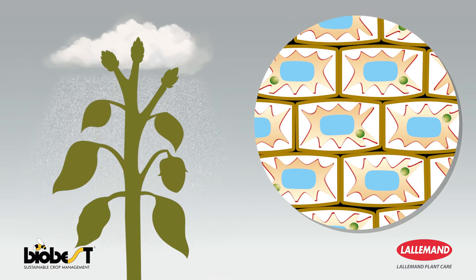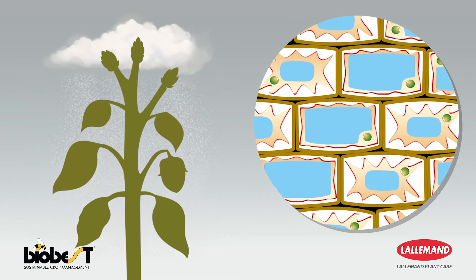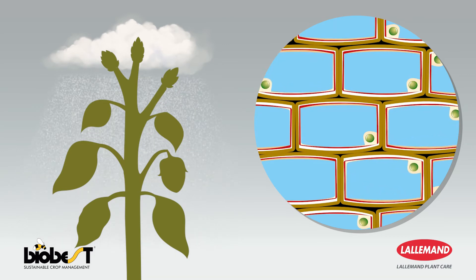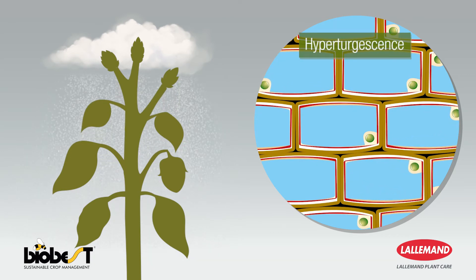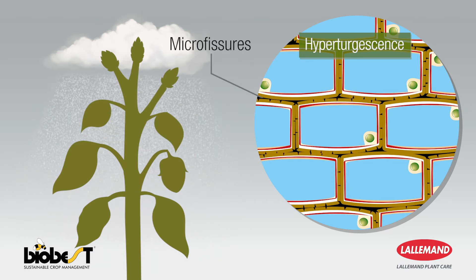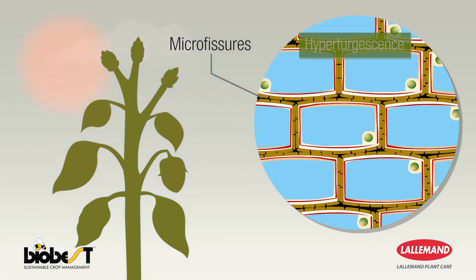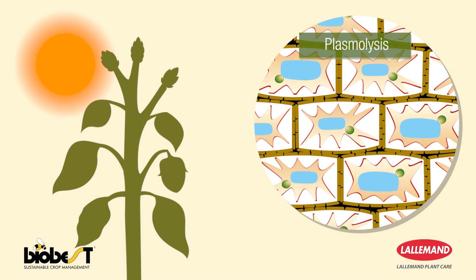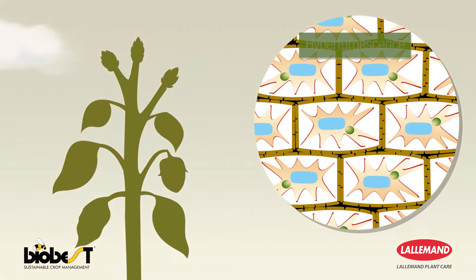In a situation of excess water, the extracellular medium becomes loaded with water, and to restore balance, the vacuole fills up. This is hyperturgescence. The mechanical pressure on the cell walls causes micro cracks, and climatic changes amplify this phenomenon.